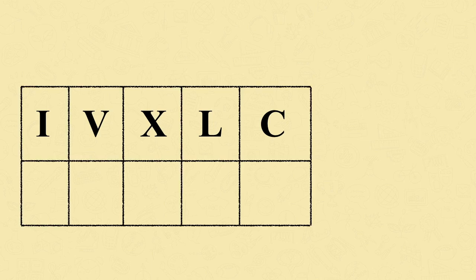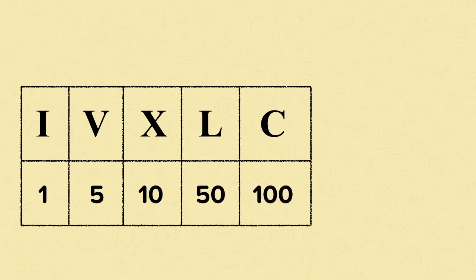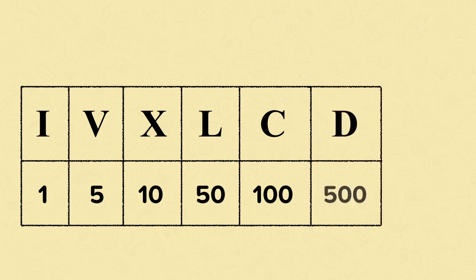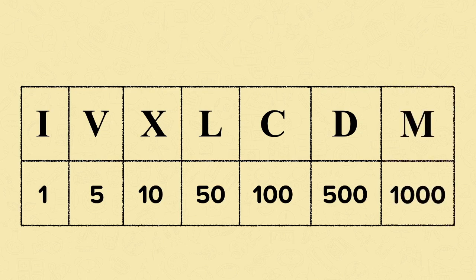I represents 1, V represents 5, X represents 10, L represents 50 and C represents 100. Now we're going to look at another Roman numeral and that's D. D represents 500. And finally, M represents 1000.